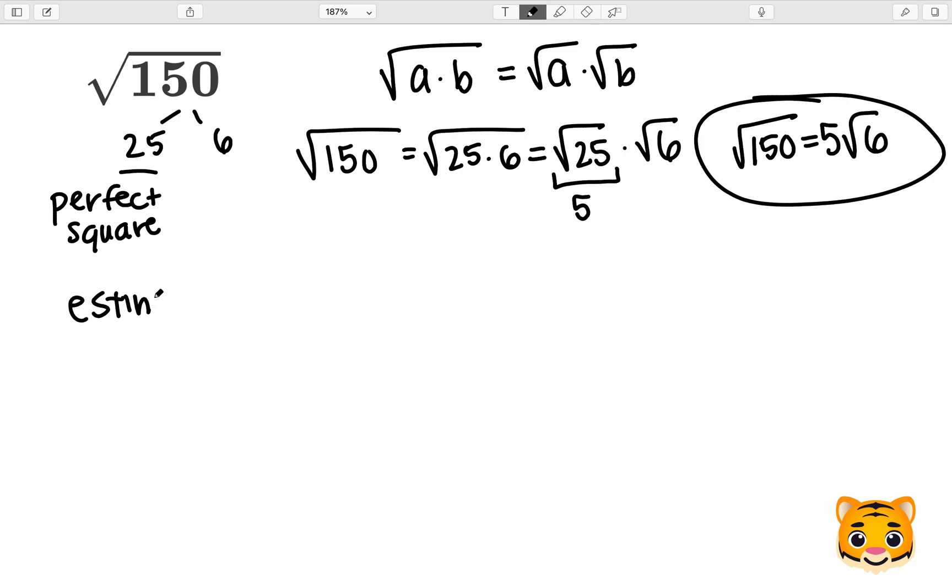If we want to estimate the square root of 150 to the nearest whole number, we can use perfect squares near 150. If we look at 12 squared, we get 144. If we look at 13 squared, we get 169.